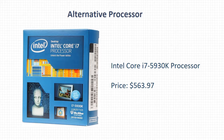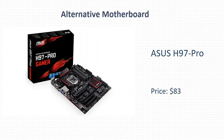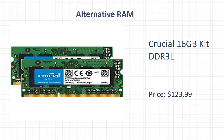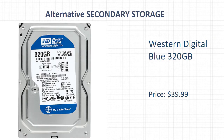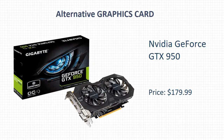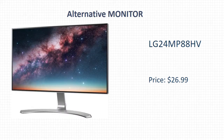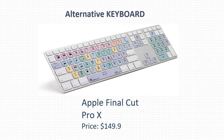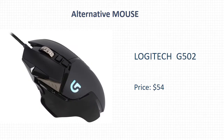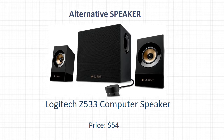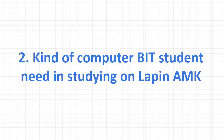Here are the alternative components for all of the components above: Intel Core i7-5930K processor, Asus B97 Pro motherboard, Crucial 16 Gigabyte Kit DDR3L RAM, Western Digital Blue 320 Gigabyte secondary storage, NVIDIA GeForce GTX 950 graphics card, XONAR S102 sound card, LG 24MP monitor, Apple Final Cut Pro X keyboard, Logitech G502 mouse, and Logitech Z533 computer speaker.